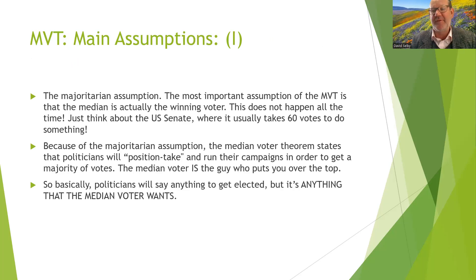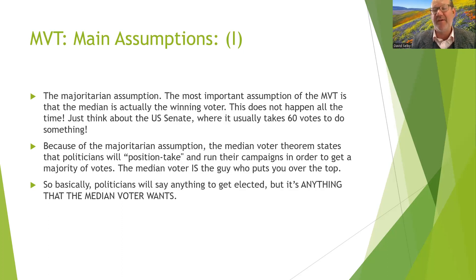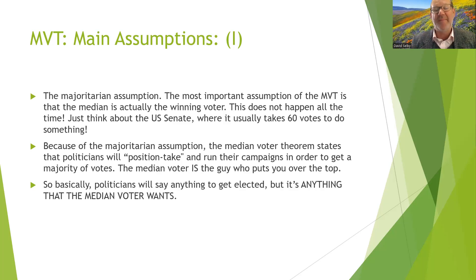The main assumptions of the median voter theorem: the first is the majoritarian assumption — the median is the winning voter. This doesn't happen all the time; just think about the U.S. Senate where it usually takes 60 votes to do something. Because of the majoritarian assumption, the median voter theorem argues that politicians will position-take and run campaigns to get a majority of votes. The median voter is the one who puts you over the top, so candidates will appeal to that person.